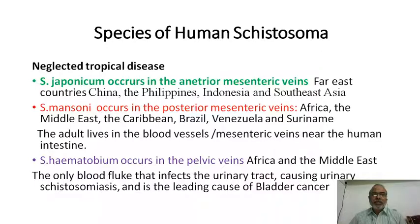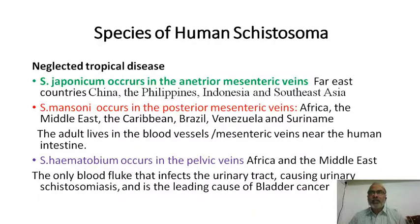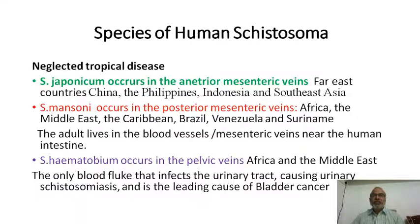Schistosoma mansoni occurs in the posterior mesenteric veins whereas Schistosoma japonicum occurs in the anterior mesenteric veins — very close to the small intestine. Schistosoma mansoni is present very close to the large intestine and is prevalent in African countries, Middle East countries, Caribbean countries, Brazil, Venezuela, and Suriname.